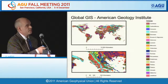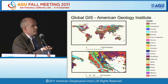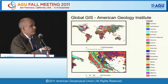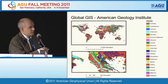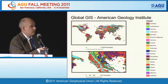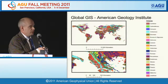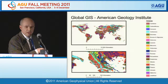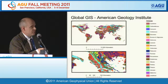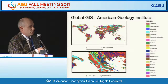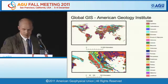The second dataset is the Global GIS from the American Geology Institute. This is only a continental dataset and doesn't include Antarctica or Greenland. Zooming into Greece again, we see much higher resolution—just over 90,000 polygons—with the geology classes listed.